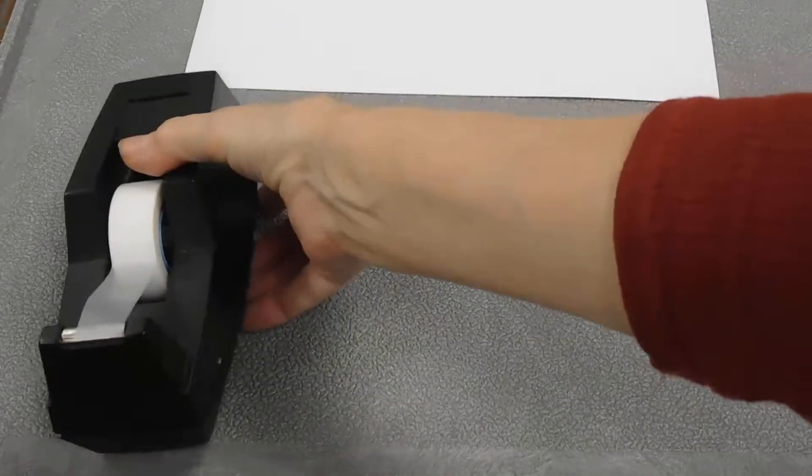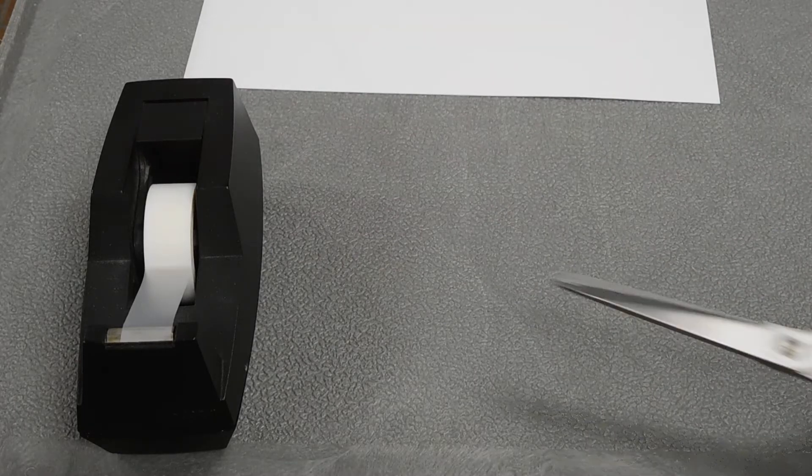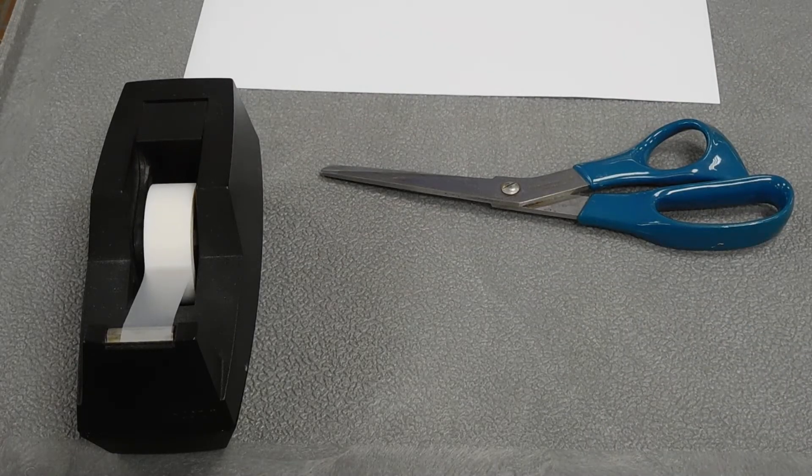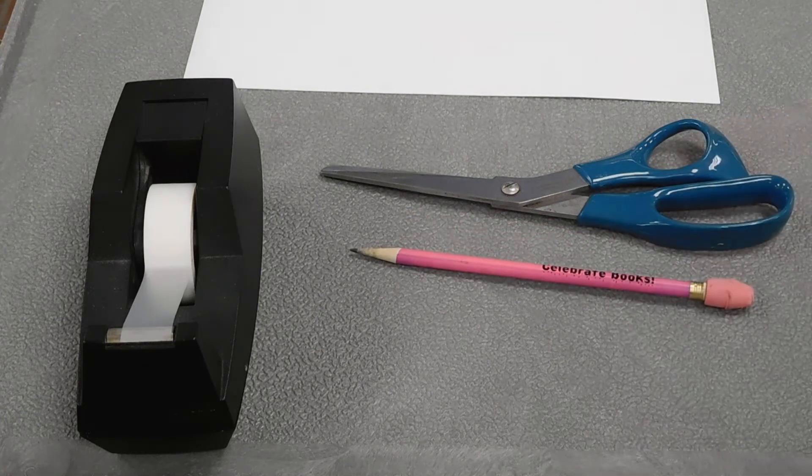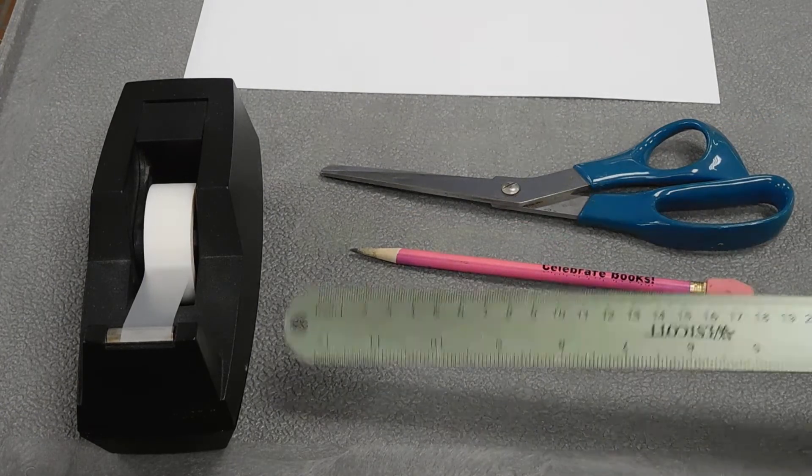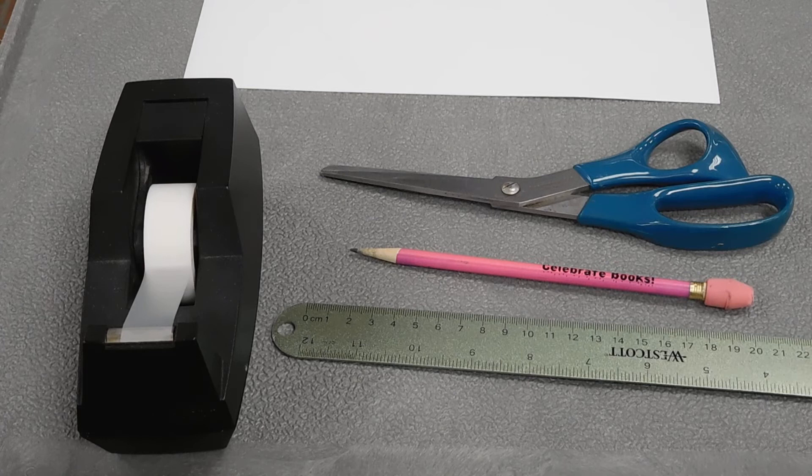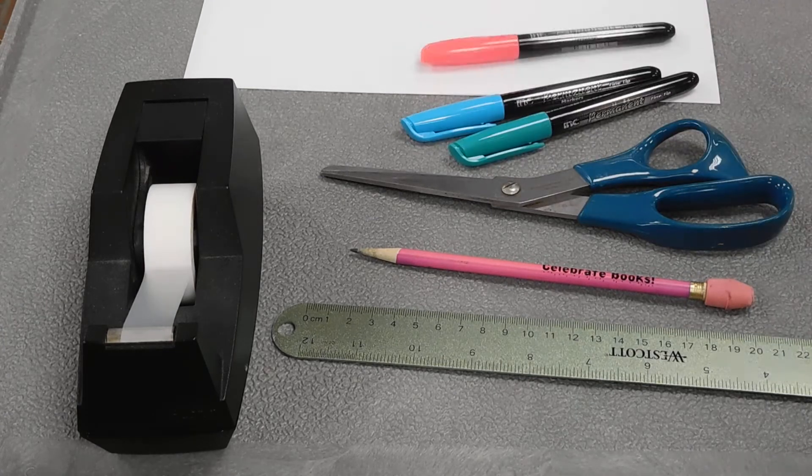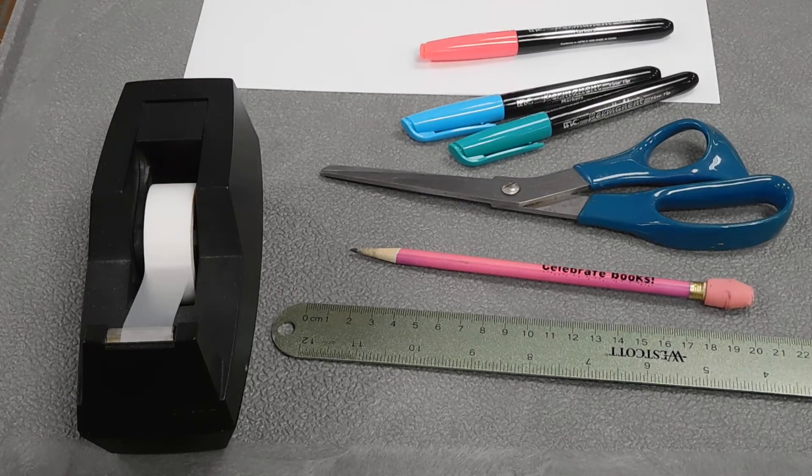You'll need paper to draw your tessellation on. Tape, scissors, pencil, ruler, and if you want, some color markers. Cardstock.